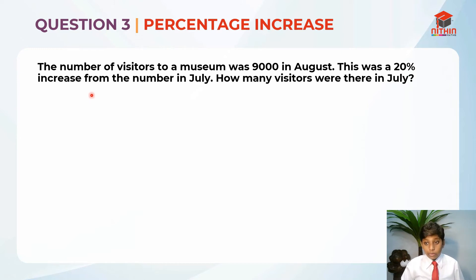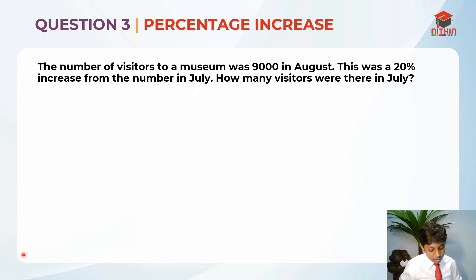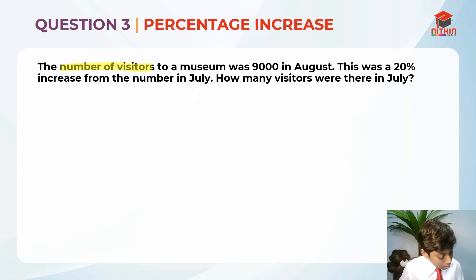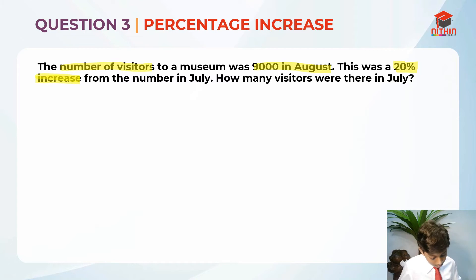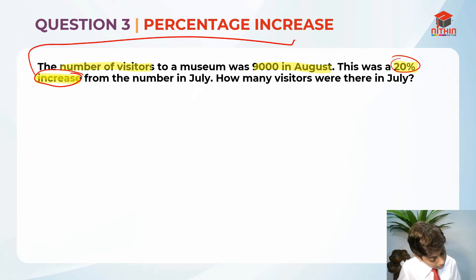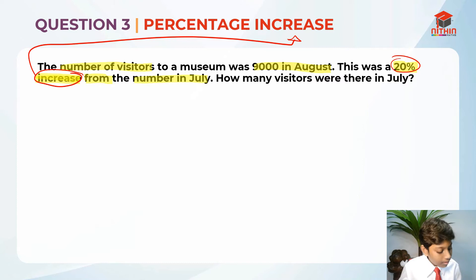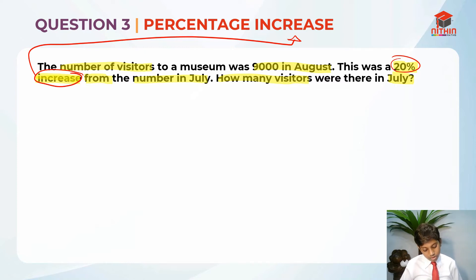So let's read the question first. The number of visitors to a museum was 9,000 in August. This was a 20% increase from the number in July. How many visitors were there in July? Now that we have read the question, let's highlight the key information. The number of visitors was 9,000 in August, and this was a 20% increase from July. See this word 'increase' here? So this was a 20% increase from the number in July. I hope you understand the keywords and the question right now.